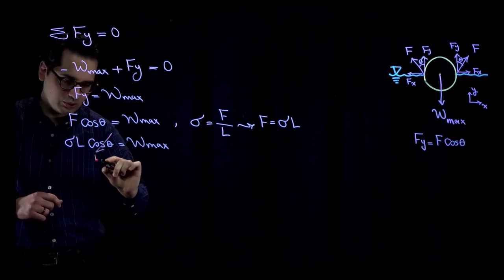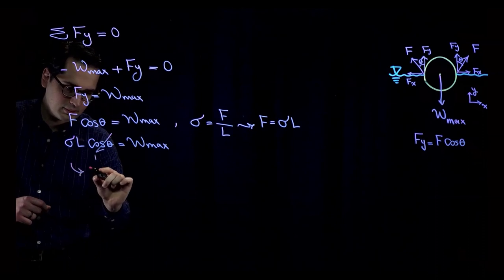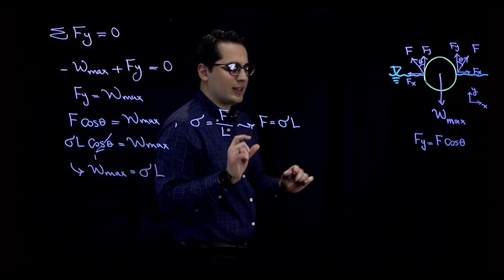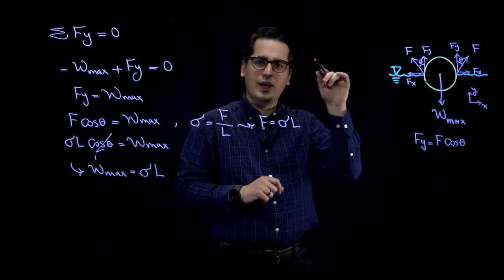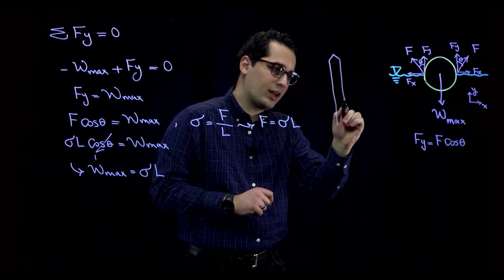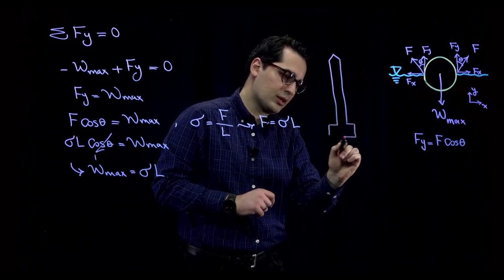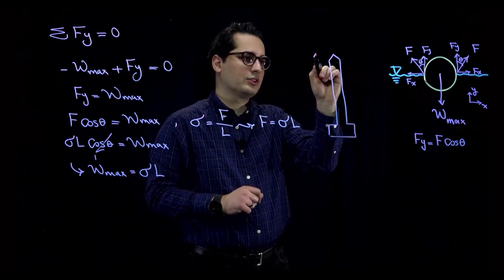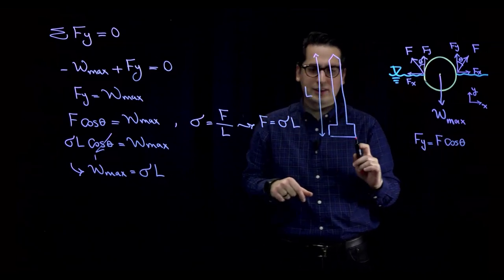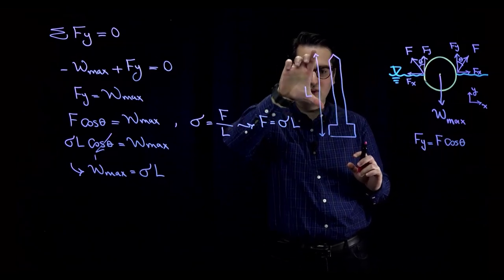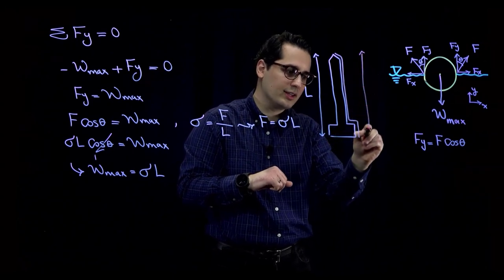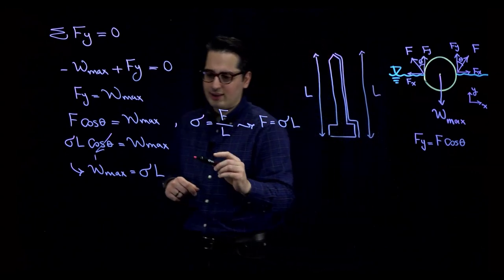If theta is very very small, we can assume cosine of theta equals 1, which gives W-max equals sigma times L. But what is L? L is the length of contact between the water and the needle. Looking at the aerial view of the needle from above — this side of the needle is in contact with water, that's one L, and this side of the needle is also in contact with water, so there is another L on this side. Therefore, the total contact length is two L's.